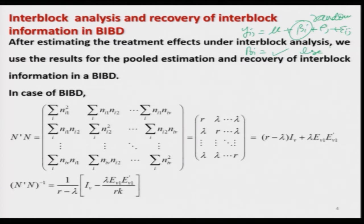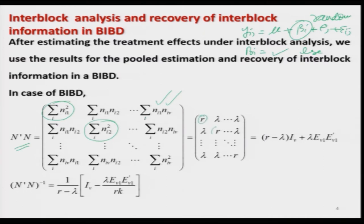Now let us find out all those expressions found mathematically earlier for the case of BIBD. We simply substitute the different values at suitable places. N'N, which we already found, has diagonal elements equal to the sum of squares of the n_ij's and cross product terms. In the case of BIBD, N'N is a matrix where the diagonal elements are all r and off-diagonal elements are lambda.